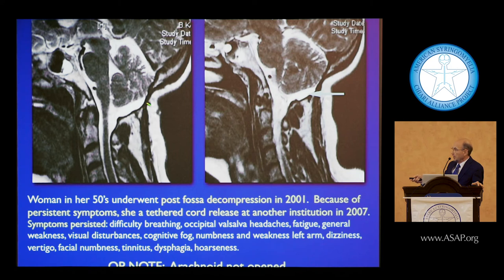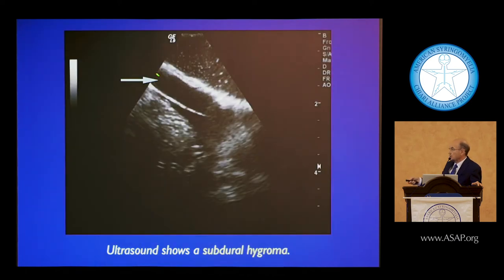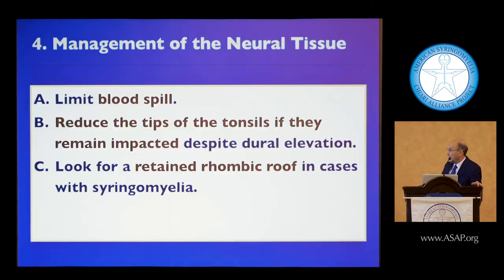Here is another patient who was not doing well following surgery. Something about the imaging looked wider in that area. Intraoperatively, that was indeed a subdural hygroma — the dura was there, the arachnoid was there. You take the arachnoid out to resolve it.